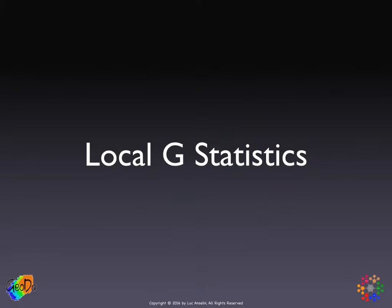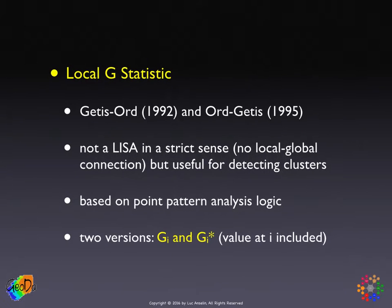An alternative approach to detect local clusters is based on the local G statistics. These were developed by Art Geddes and Keith Ord in a number of papers in the early 1990s. In a strict sense, the G statistic, the GI and GI star statistics, are not LISA because there is no proportional local-global connection, but they are nevertheless very useful for detecting spatial clusters.